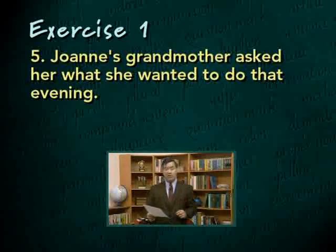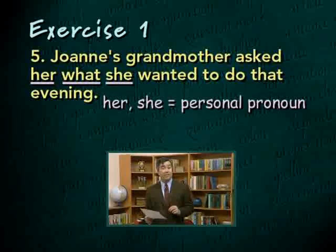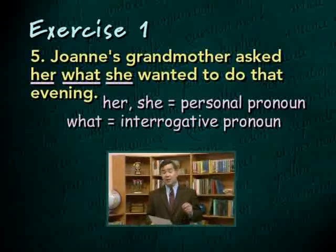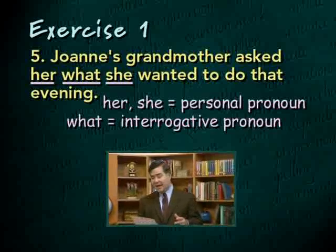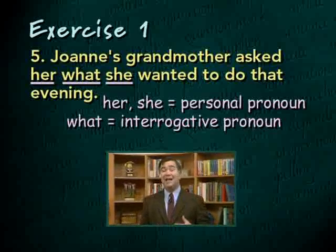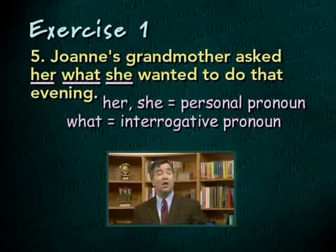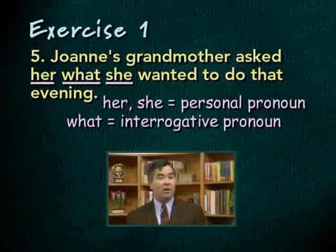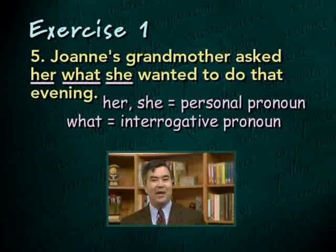In the next sentence, there are three pronouns: her, what, and she. Her and she are personal pronouns. What is an interrogative pronoun — it can introduce either a direct or indirect question. In this case, what is being used to introduce an indirect question: Joanne's grandmother is asking Joanne what she wanted to do that evening, and that question is being reported to us indirectly.